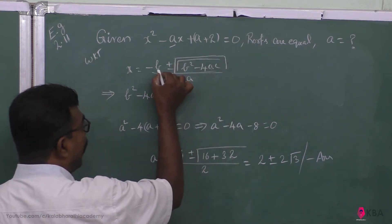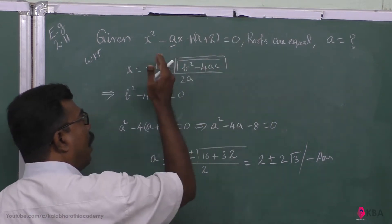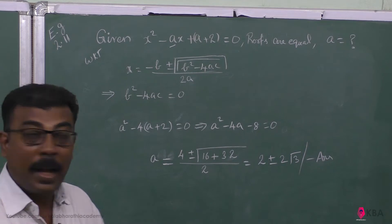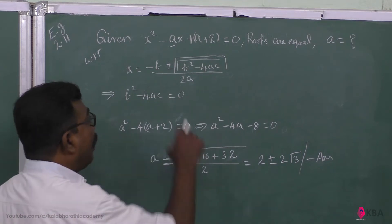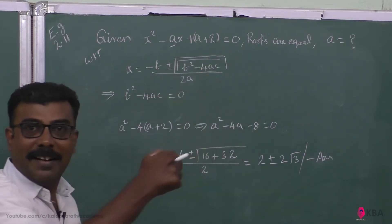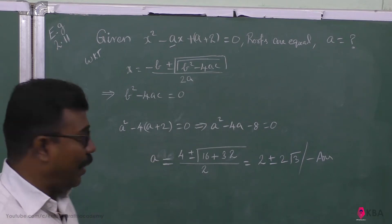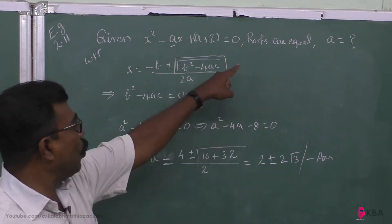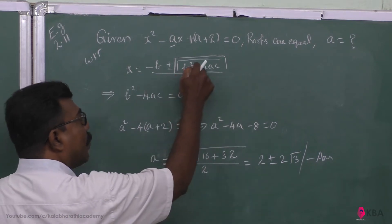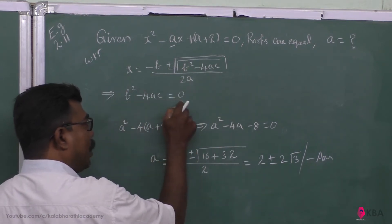இங்க பாரங்க — minus b உன்னு plus இல்லாத்து minus, அமை 0 ஆனா மட்டும்தான் root equal ஆகும். அப்படி ஆகிறதனால் இவனுக்கு பேர் determinant — root-ஐ திருமானிக்கிறால்லையா, so he is called as determinant. Roots equal-ஆவதற்கு இந்த determinant 0 ஆகனும், meaning b² - 4ac = 0.